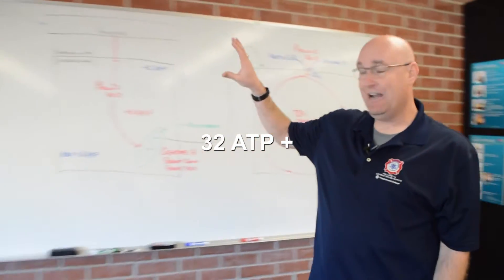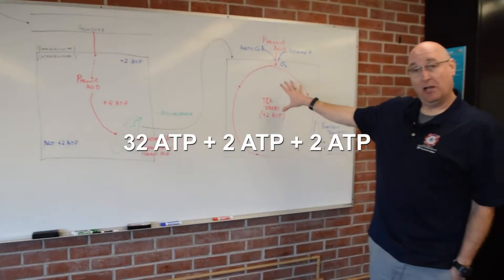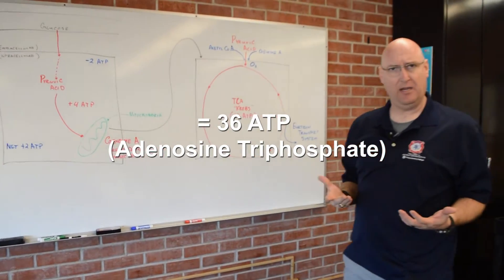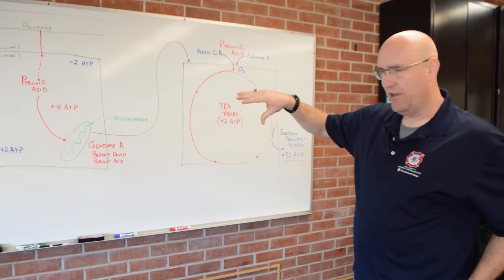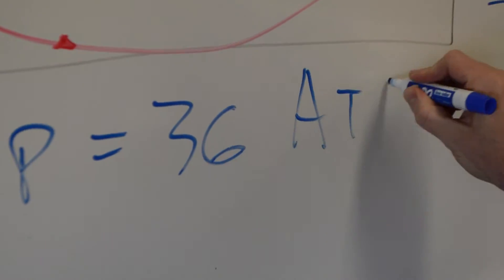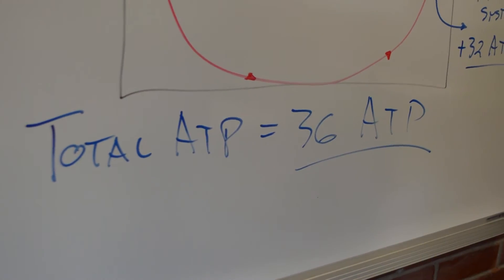So we get a total of 32 ATP out of here. We get a net gain of two ATP in the cell. And we get two ATP molecules from this initiation of the Krebs cycle. So we get a total of about 36 ATP produced within our cells. Thirty-six molecules of ATP per molecule of glucose.